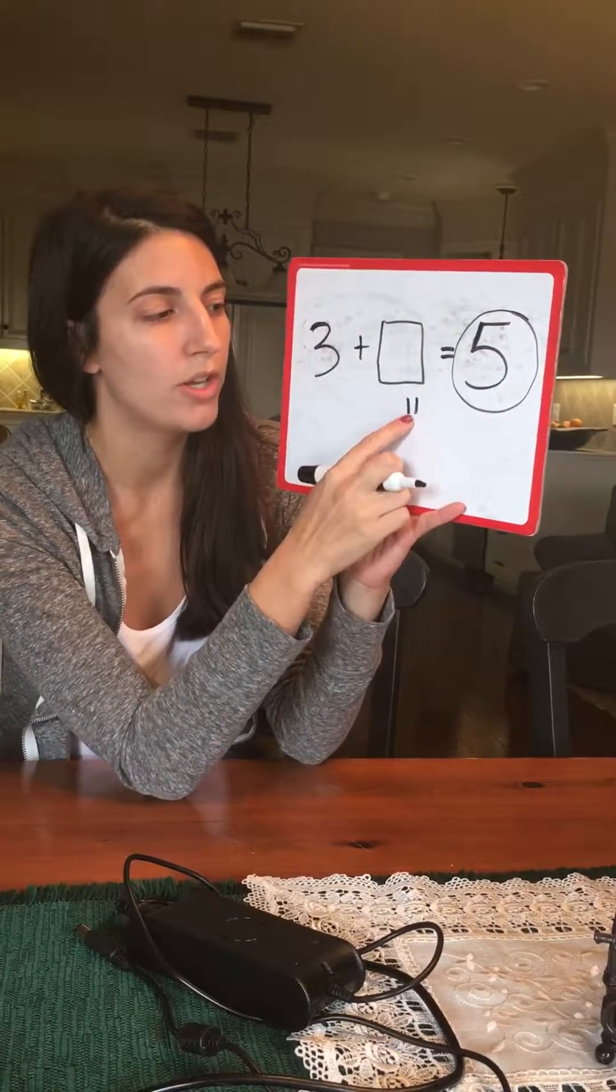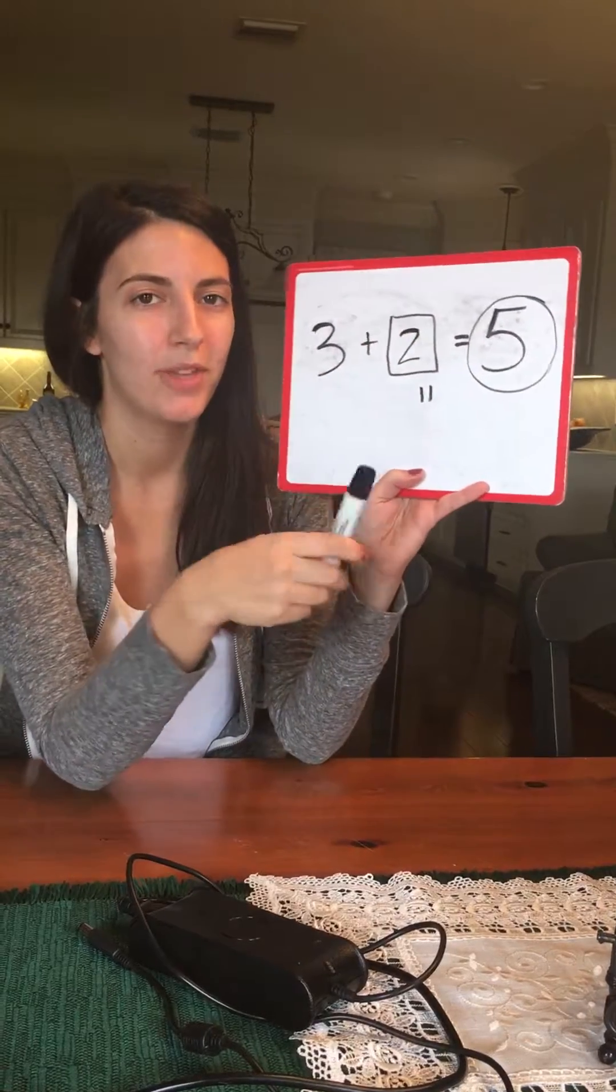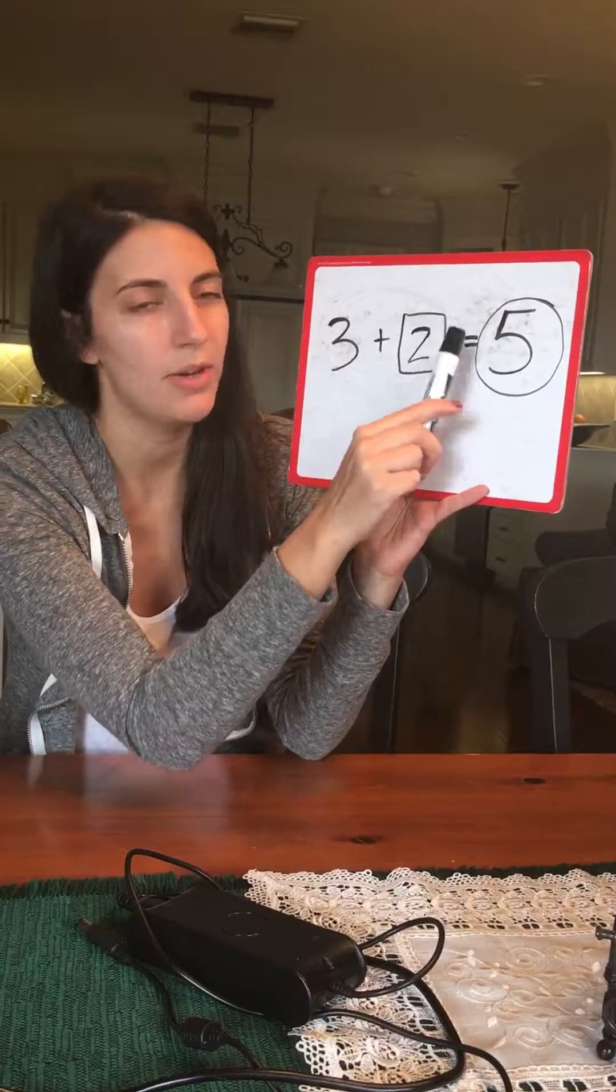So then you ask them one, two. What number goes in the box? Two. So then read the whole problem. Three plus two equals five.